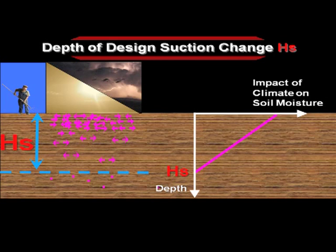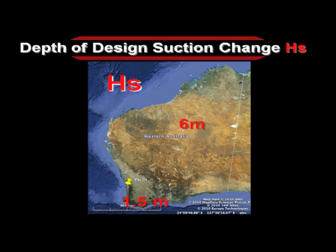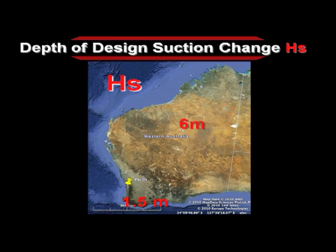To go one step further: if we plot the impact of climate on soil moisture versus depth, the standard assumes that the impact linearly decreases with depth from the ground surface to HS, where there is no more impact of the climate. HS will be high where there is a great contrast between summer and winter — like in northwest Australia and inland, where HS reaches six meters. HS will be lower where the contrast is mild, like in Albany at 1.5 meters. In Perth, it's around two meters.